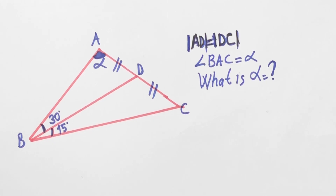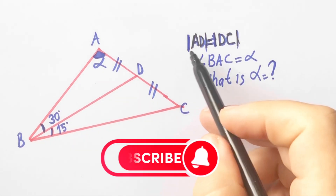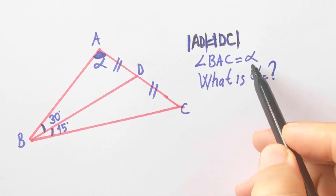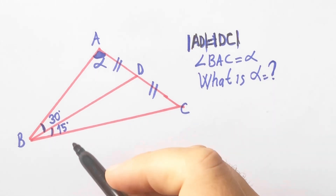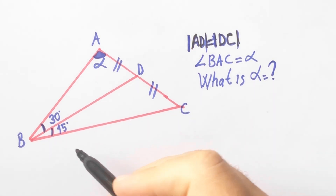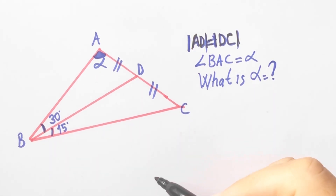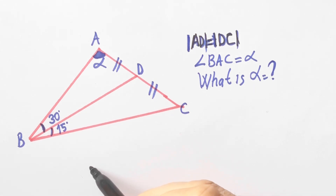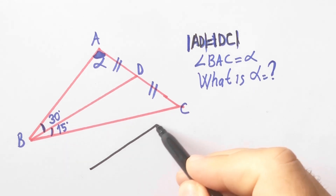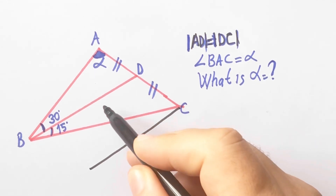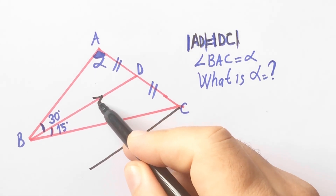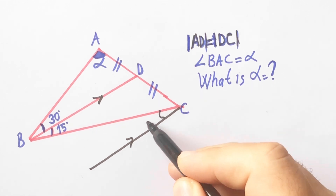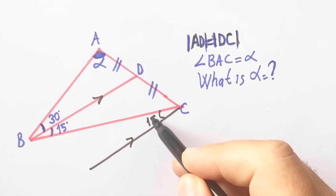Hello everyone. Let's start: AD is equal to DC, BAC is alpha — what is alpha? If we draw a parallel line to BD like this, here will be 15 degrees.